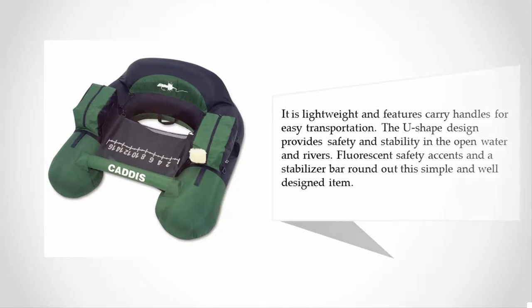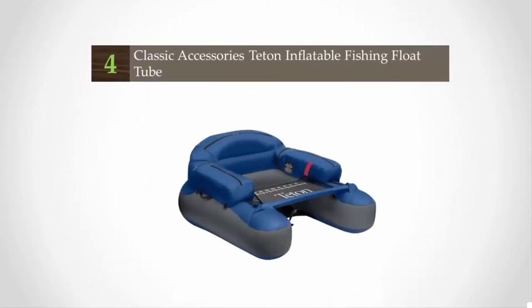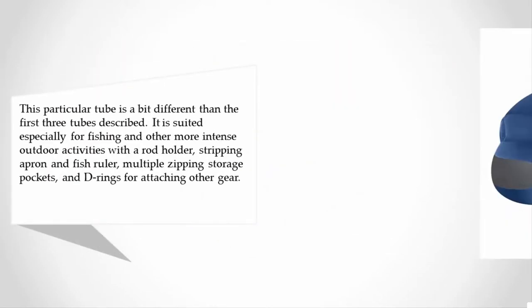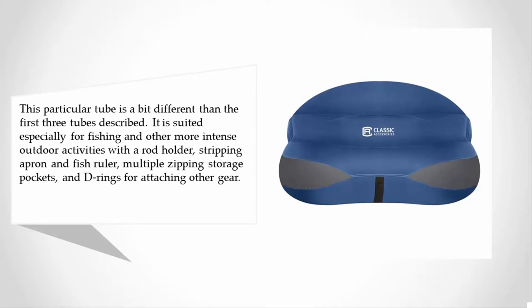At number four, this particular tube is a bit different than the first three tubes described. It is suited especially for fishing and other more intense outdoor activities, with a rod holder, stripping apron, and fish ruler, multiple zipping storage pockets, and D-rings for attaching other gear.